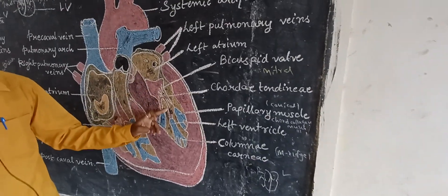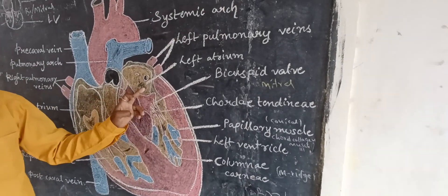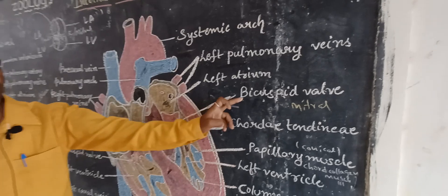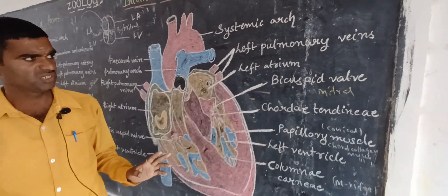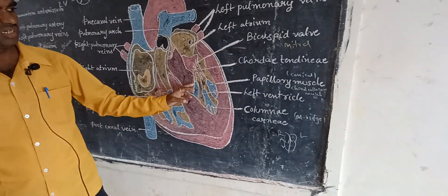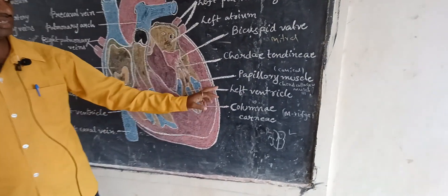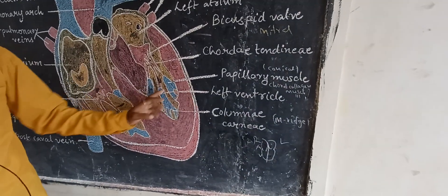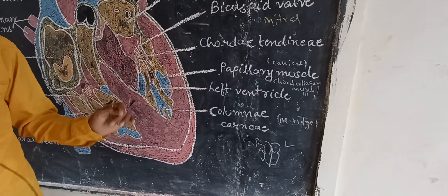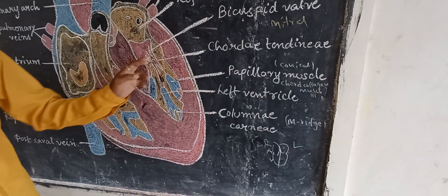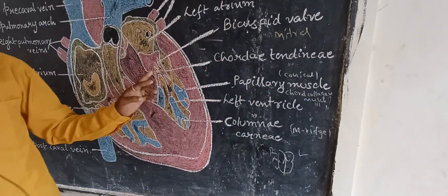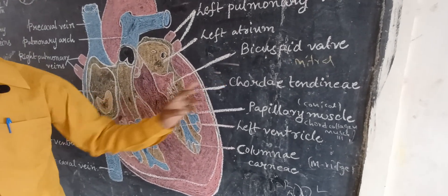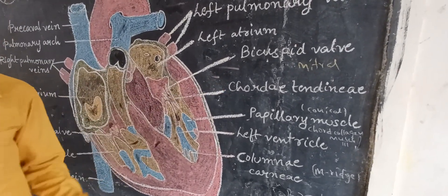From the left atrium through the left ventricle, blood is pumped with the help of bicuspid valves. The cord-like muscles are called chordae tendineae.